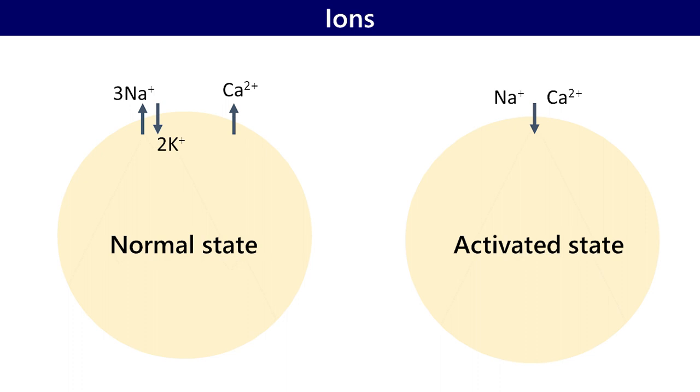But how cells do it, no one knows. In the case of ions, 3 sodium is exported while 2 potassium is incorporated to maintain membrane potential.